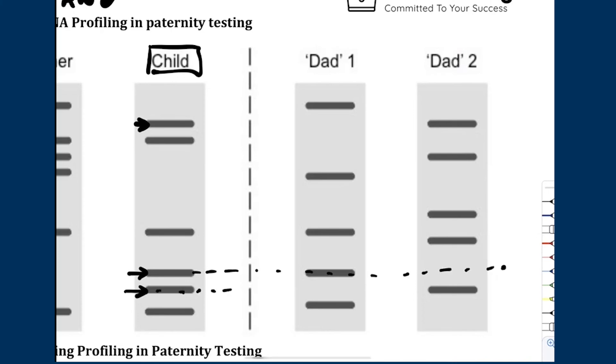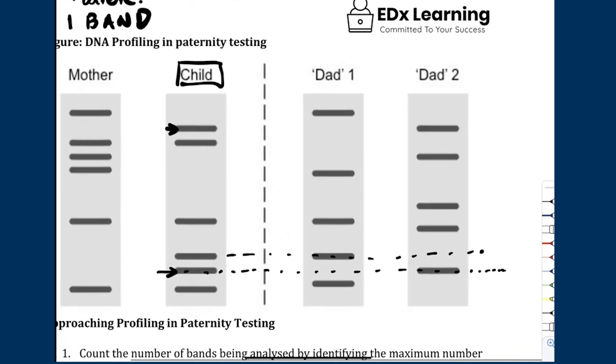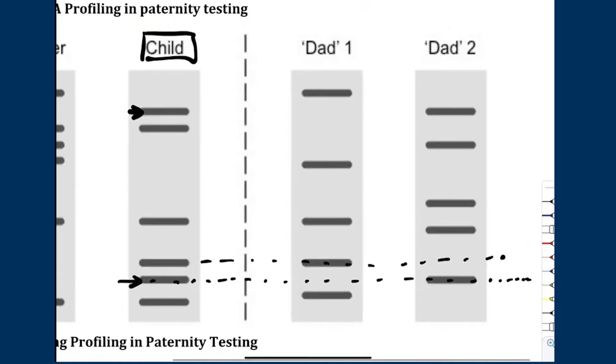Now, here you see a bit of an issue because you see the band here is not present in Dad 2, and the band here is present in Dad 2. So this could be the case of a mutation. This is a little bit of a weird anomaly. You typically will not see it, especially for HSC question, but keep it simple for you.